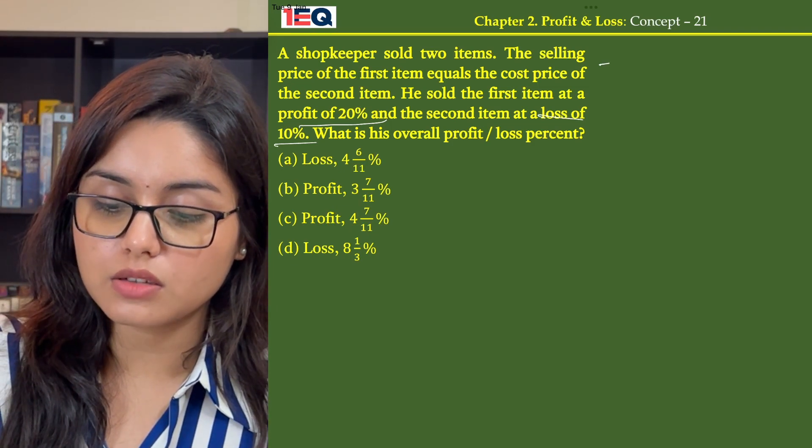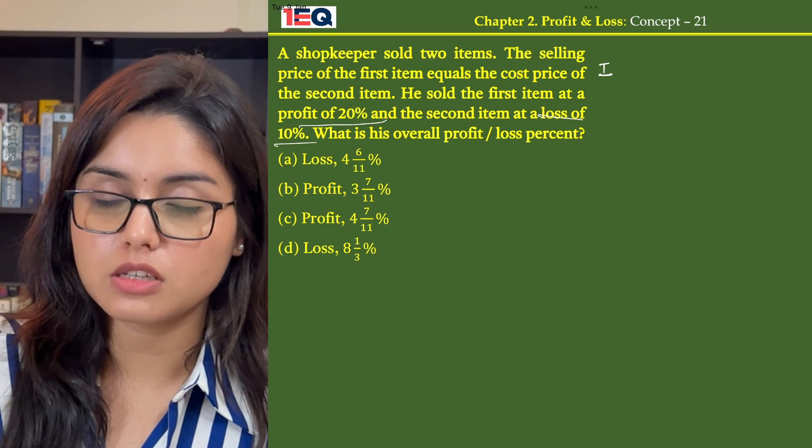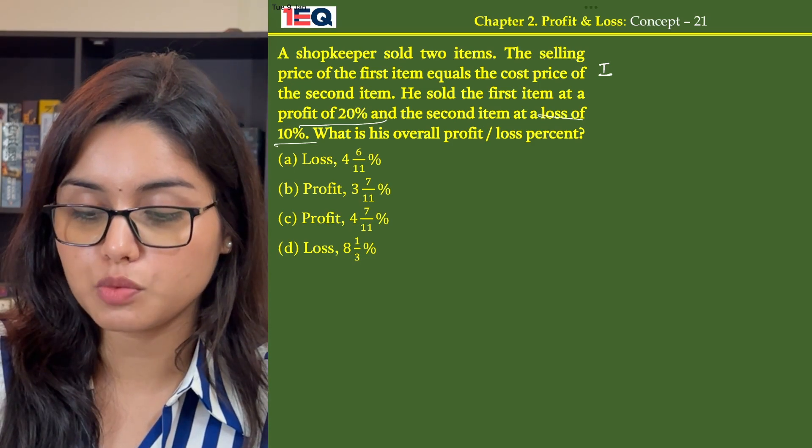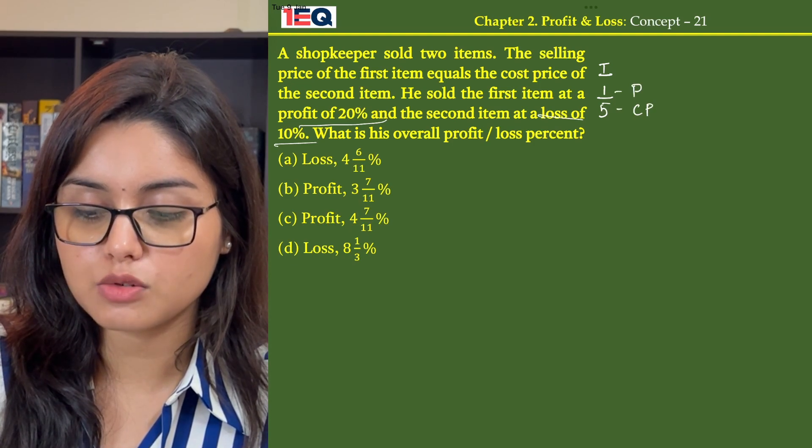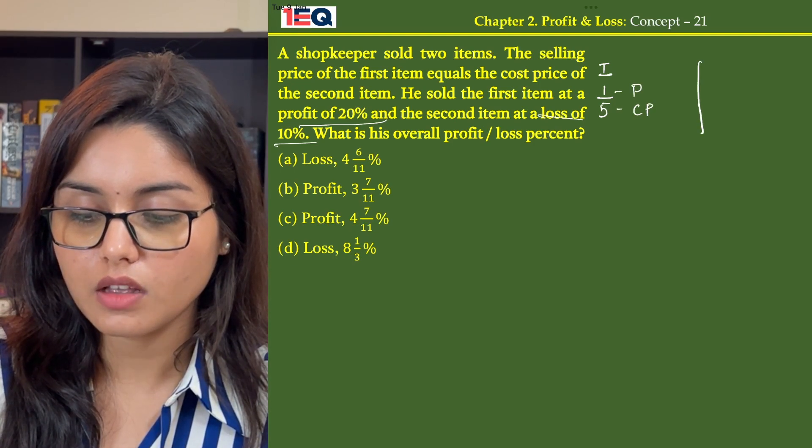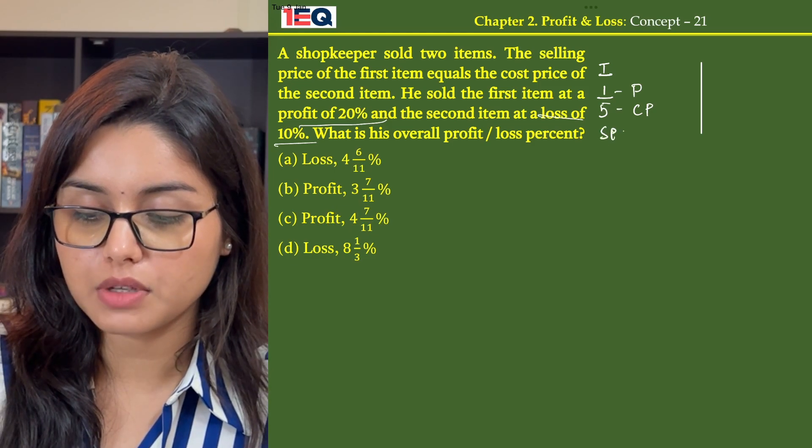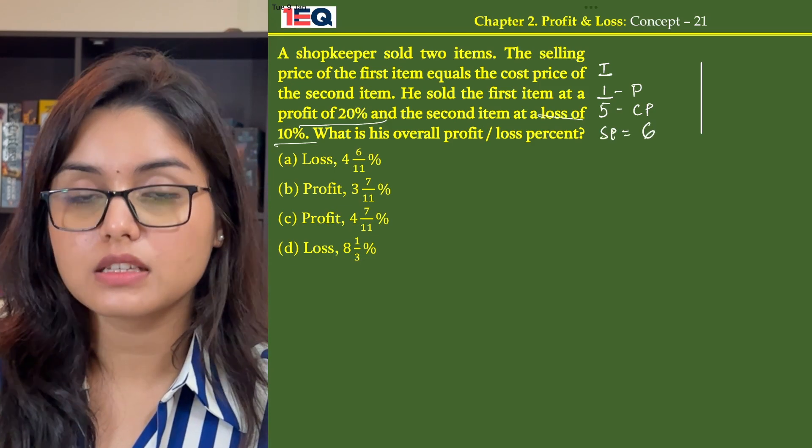So he sold item 1 at a profit of 20%. A 20% profit would mean 1 by 5, where if 5 is my CP, profit is rupee 1. And then the selling price becomes 5 plus 1, that is 6.